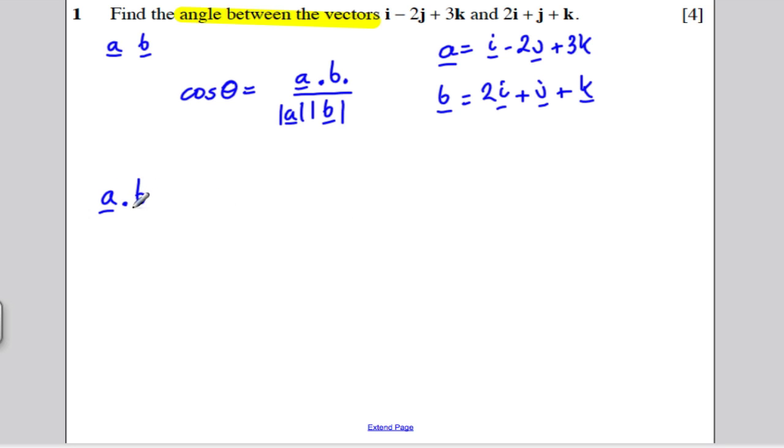What's A dot B? Let's set our work out really easy for the examiner. 1 times 2 is 2. Minus 2 times 1 is minus 2. And 3 times 1 is 3. And I get the answer 3.